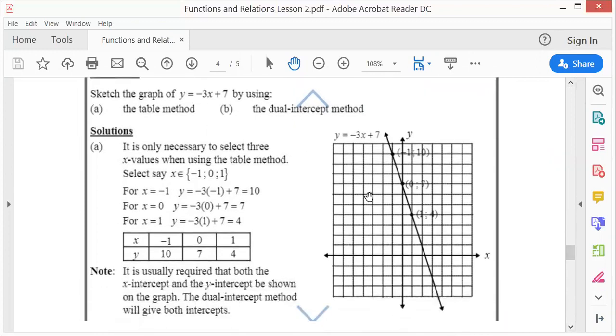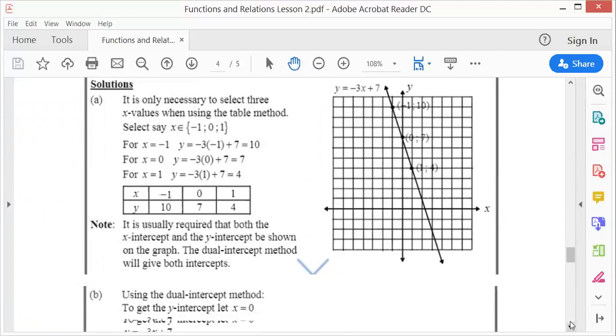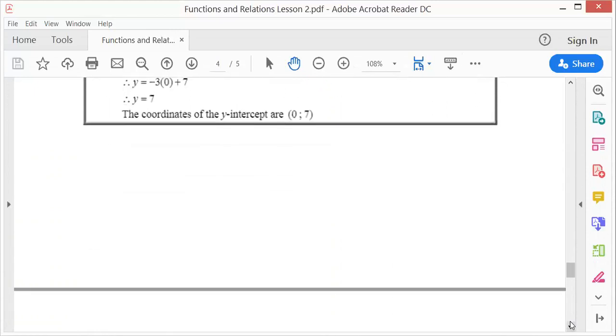And of course, like this one, if m is negative, the graph will lie from left to right. So it's a matter of the sign. Please take note of that, right? So again, you can use those three points to plot the graph, or you can use the dual intercept. It doesn't matter, you'll get exactly the same answer, right? Doesn't matter.